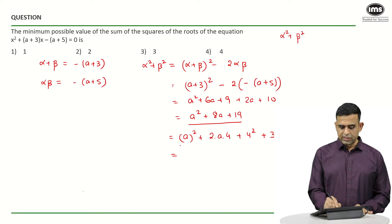So now, this first 3 terms I can write as (a+4)² + 3.